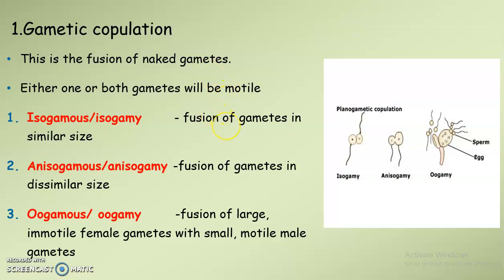Based on the size of the gametes, three different types of gametic copulation can be seen: isogamy, anisogamy, and oogamy. In isogamy, the two gametes are similar in size and they fuse to form a diploid zygote.